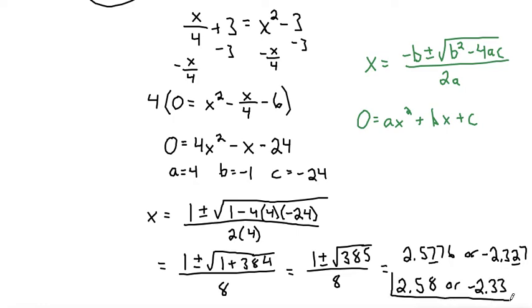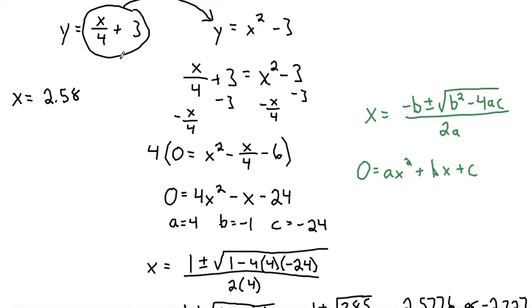So there we go. We have two answers for this problem for our values of x. Technically, those are just the values of x. When x is equal to 2.58, we can plug that back in to one of our original equations to get our y value.